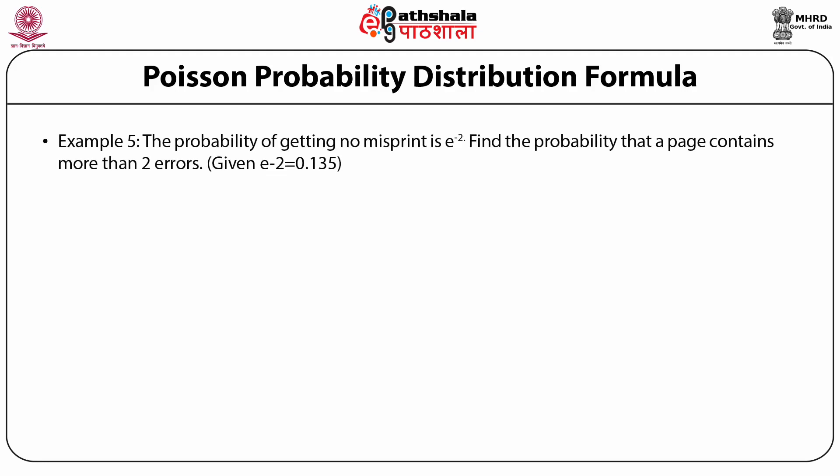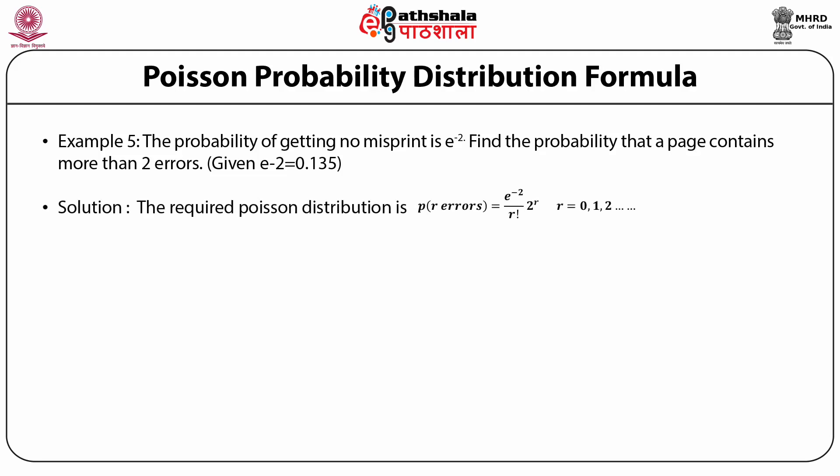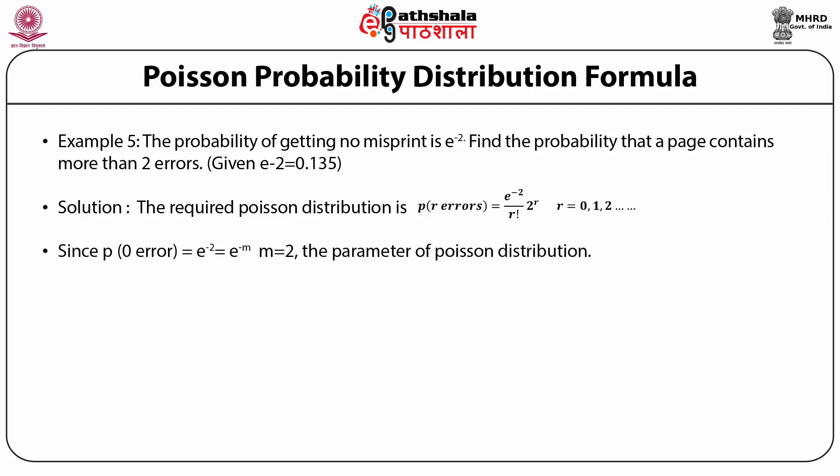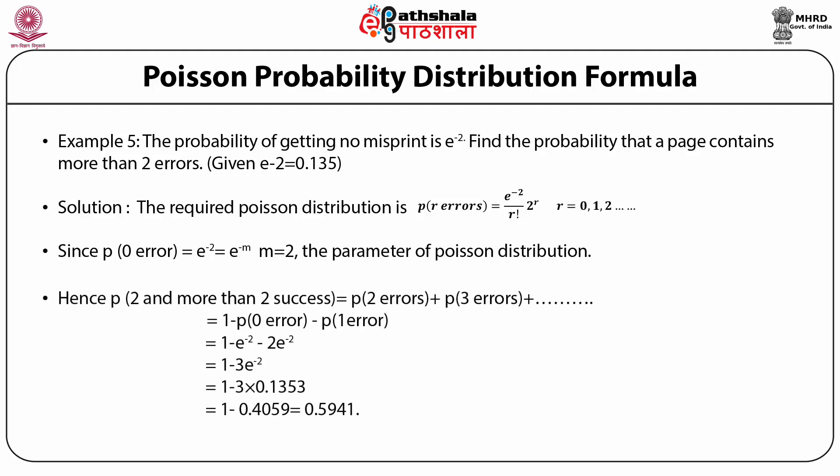Example: The probability of getting no misprint on a page is e^(-2). Find the probability that a page contains more than two errors. The required Poisson distribution is P(r errors) = e^(-2) × 2^r / r!. P(no error) = e^(-m). For more than two errors: P(r > 2) = P(2) + P(3) + ... which equals 1 minus the sum of P(0), P(1), and P(2).